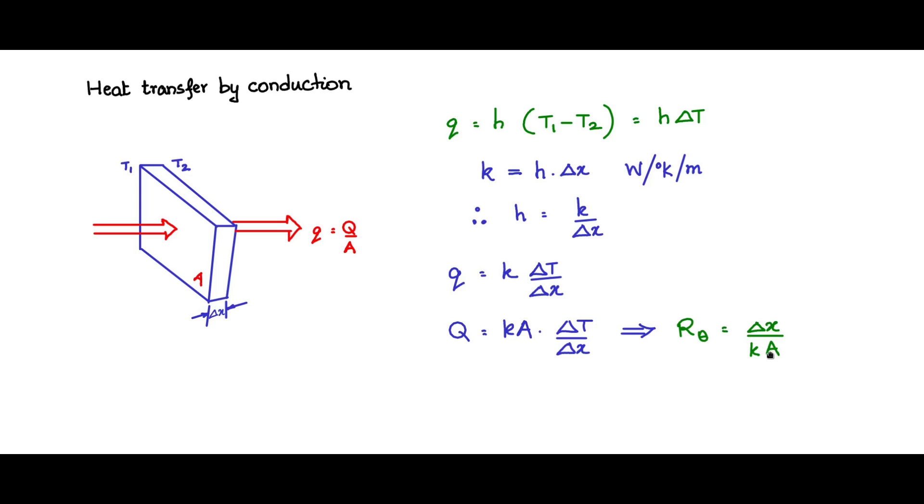So greater the cross-sectional area, smaller will be the thermal resistance and better will be the heat conduction through that material. So in heat sinks, the reason why they have the convoluted fins is basically to increase the cross-sectional area normal to the flow of the heat power.